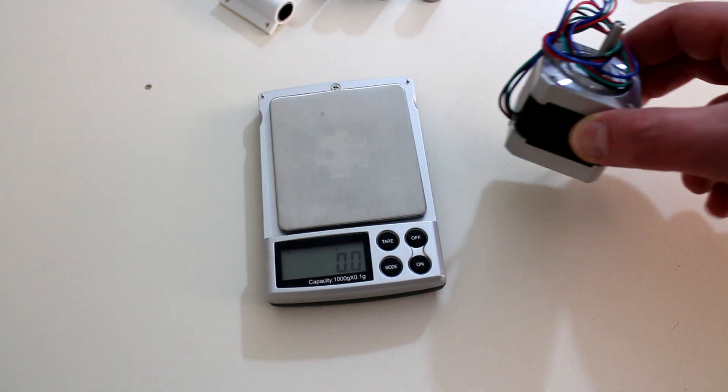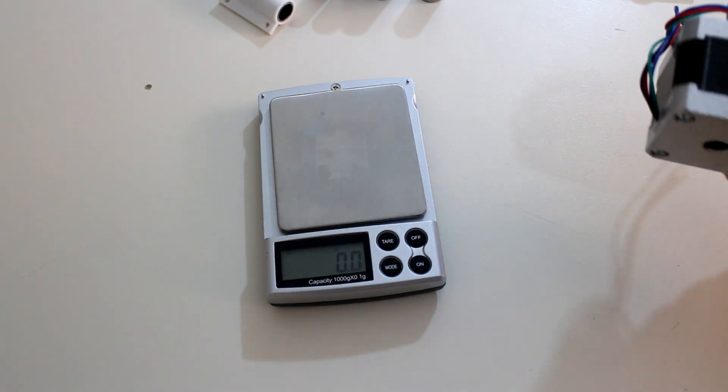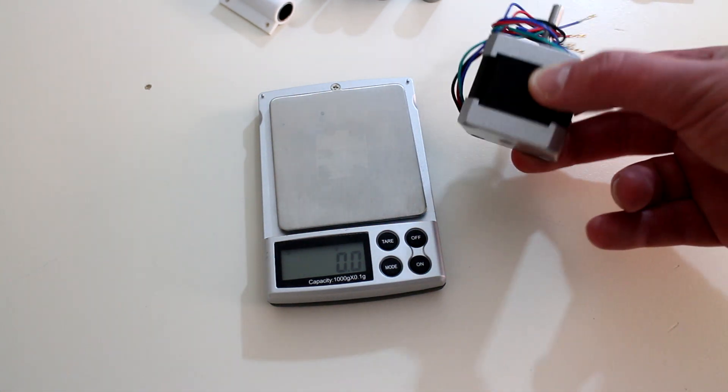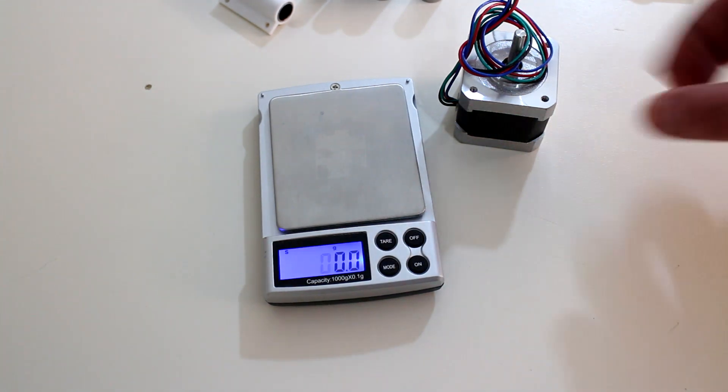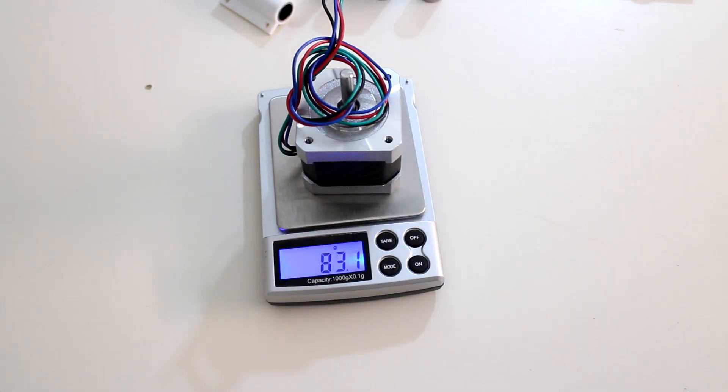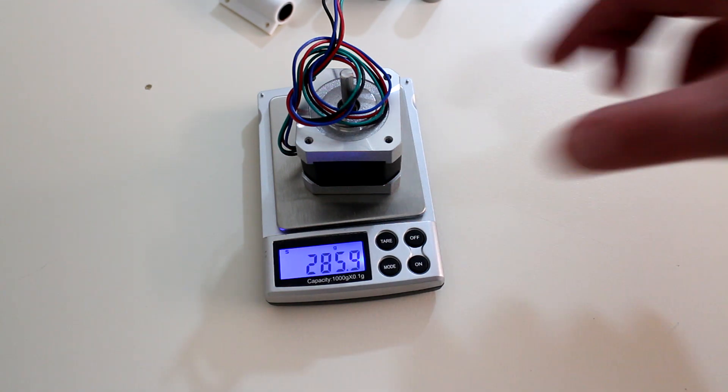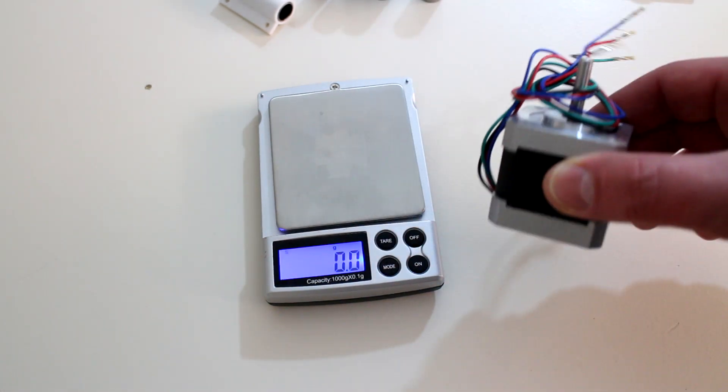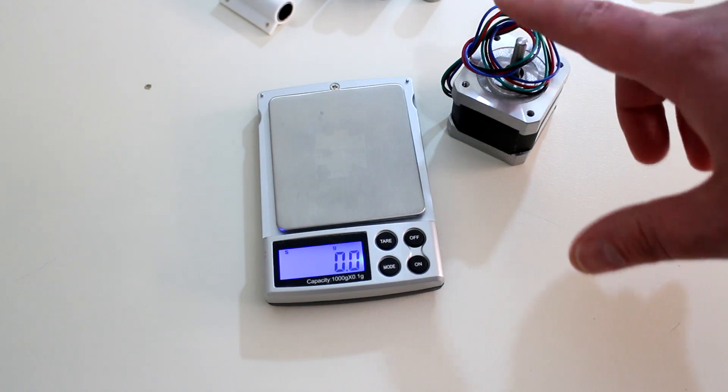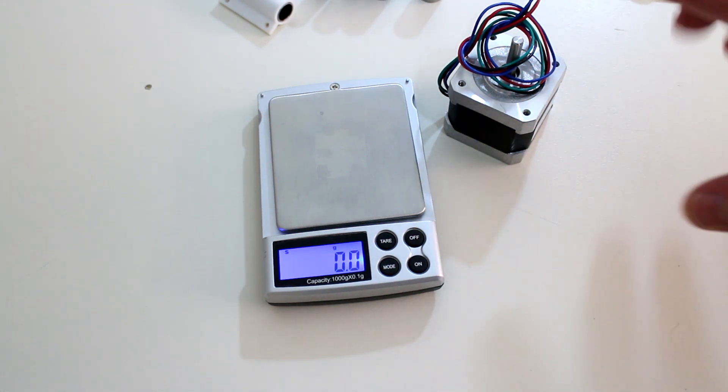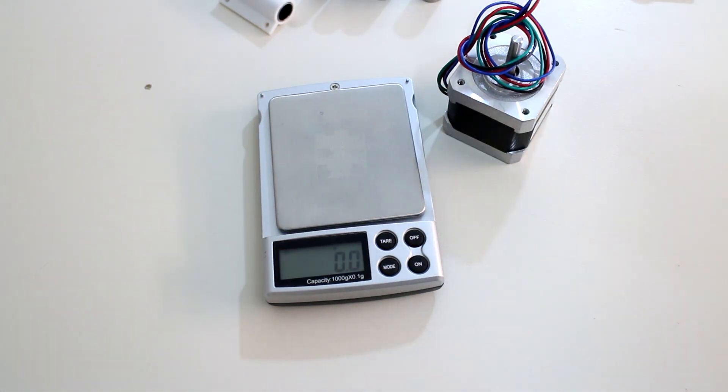But how does that compare to a stepper motor? If you're using a direct drive extruder, you'd commonly use one of these shorter NEMA 17 motors. I'll tare out the scales again, weigh one of these - we're looking at 285. So we're about two-thirds of the way of reducing the weight of just another one of these stepper motors. So as I'm using Bowden, it's almost like I've reduced the weight of the entire moving X-gantry by almost two stepper motors.